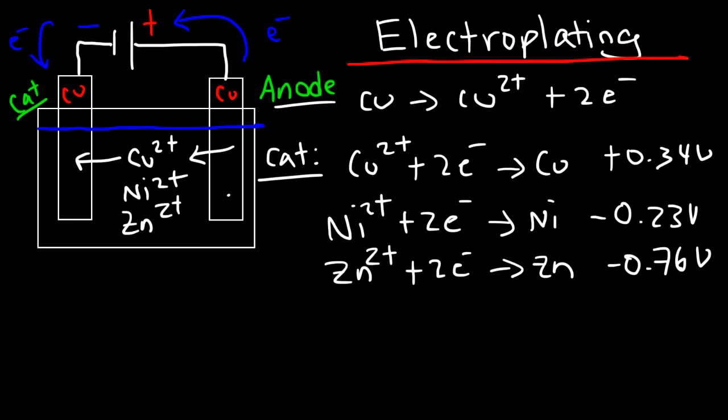So which reaction will occur at the cathode - the reduction of copper, nickel, or zinc? Well, it's going to be the one that's most spontaneous. So the reduction of copper at the cathode is most likely to occur because it has the highest cell potential. So this process is more spontaneous than the other ones. Now let's think about what's happening here.